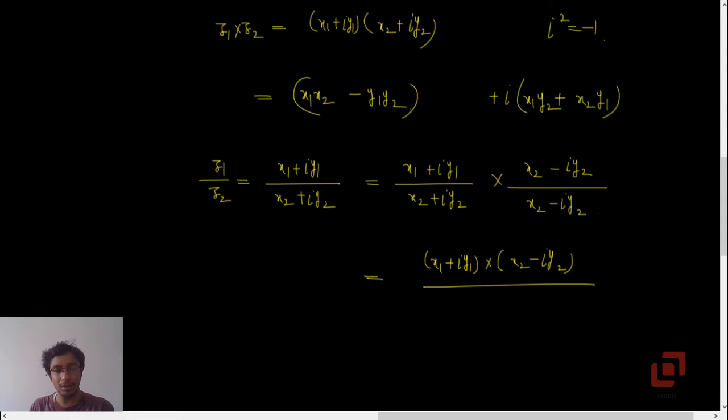Let's now talk about the denominator. This is like a plus b into a minus b, so it will be a squared minus b squared. But remember, this time our b is i y2, so if we square it, it will be minus y2 squared, because i squared is minus 1.